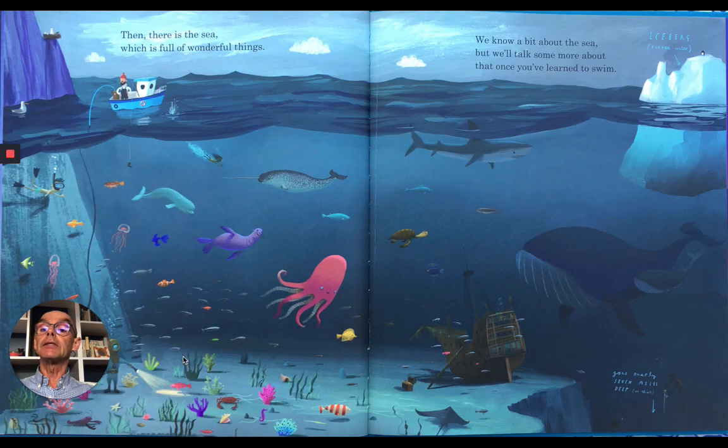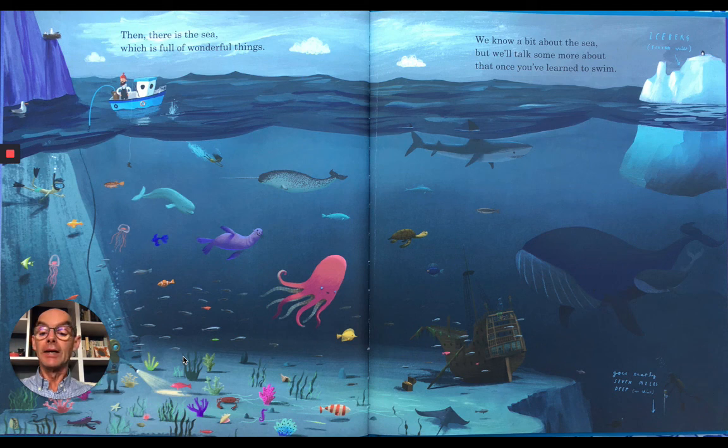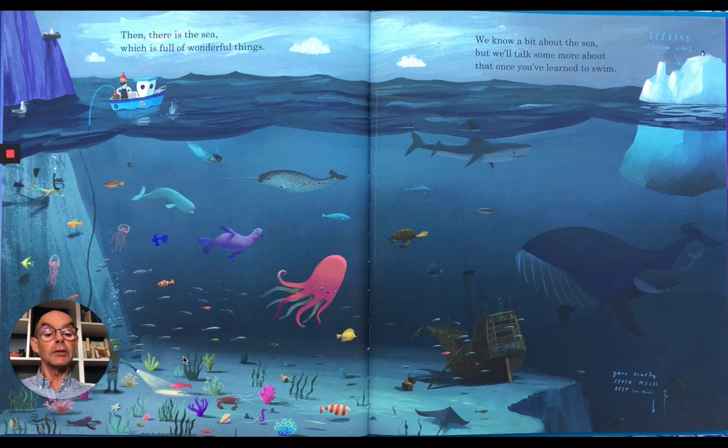Then there is the sea, which is full of wonderful things. We know a bit about the sea, but we'll talk about some more about it once you've learned how to swim. You can see there's a boat and lots of different kinds of creatures, a big whale, a shipwreck. And there it says in the bottom corner, it's seven miles deep. So the abyss there is very, very deep.